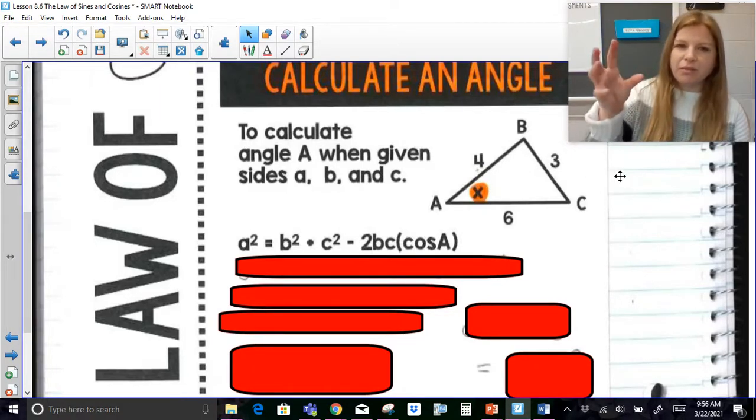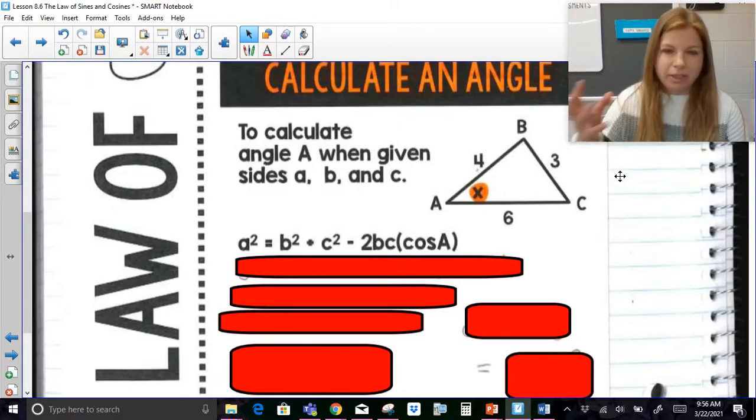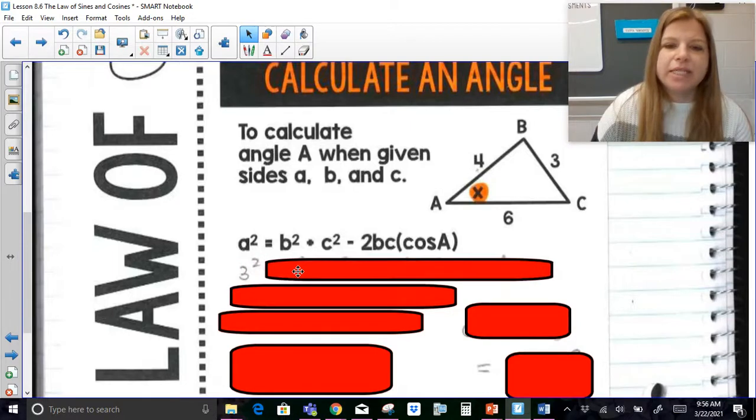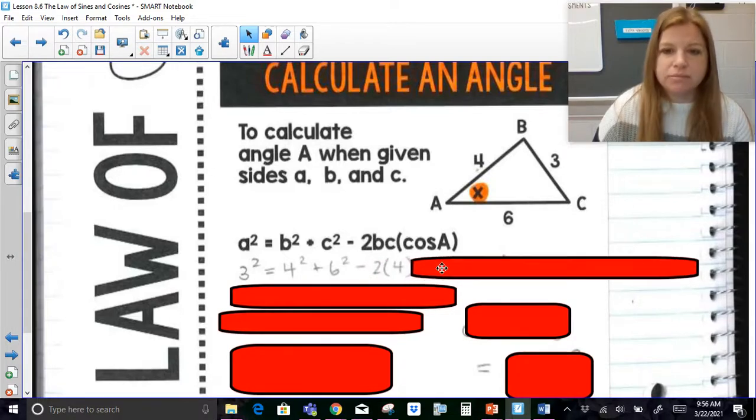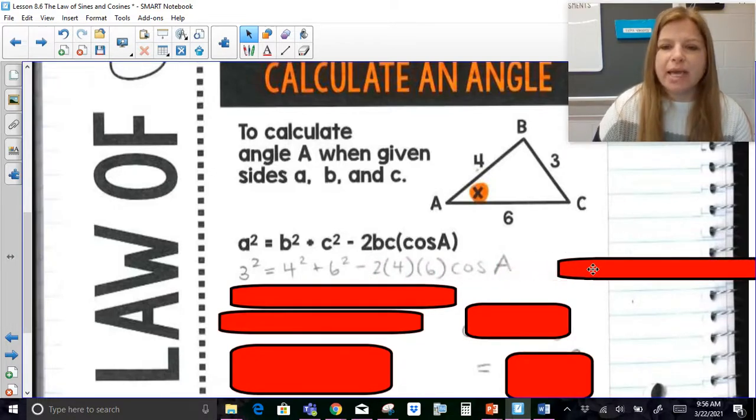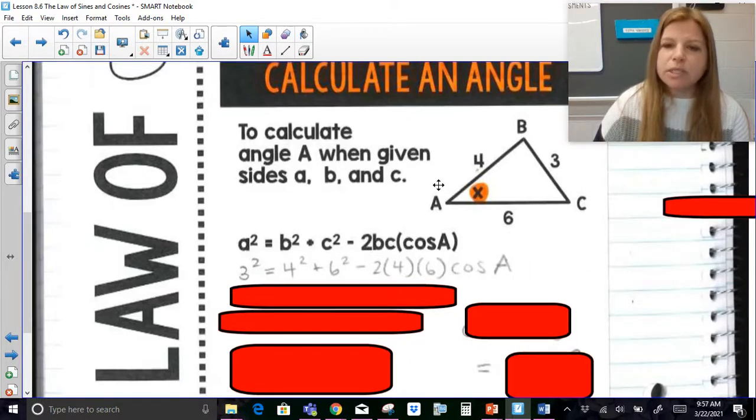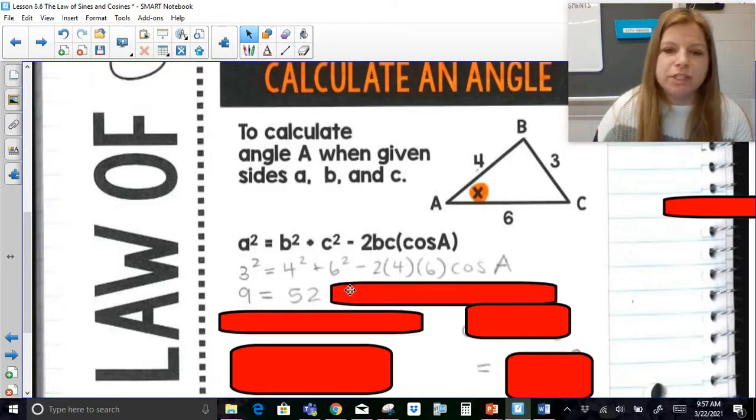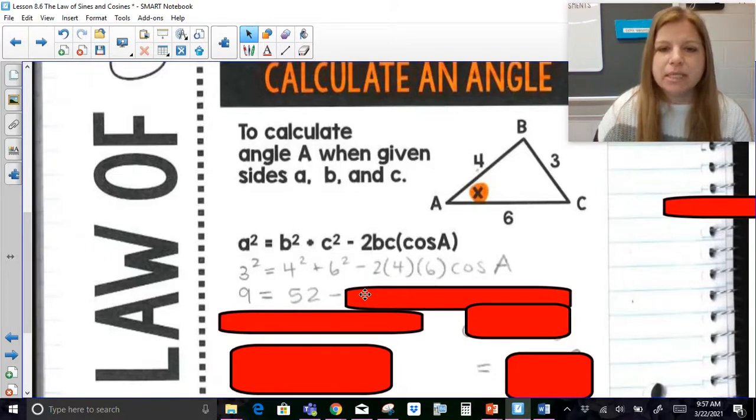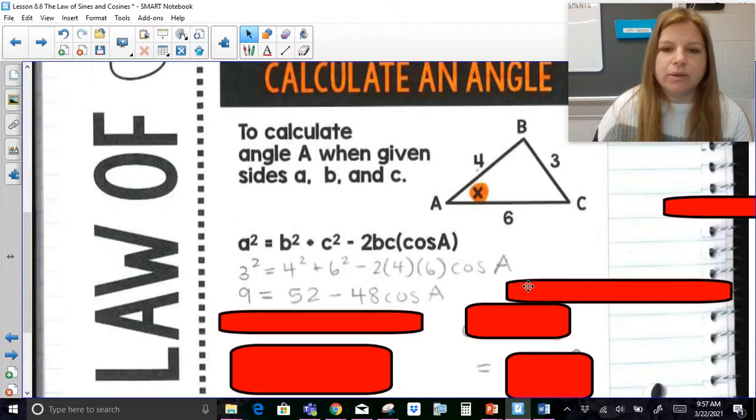And so previously that 3 would have been what we were trying to find, and now we already know it. So in this case, 3 is actually going to go in for a. So that's the side that we know. And then it's still going to be equal to the squares of the other two sides minus 2 times 4 and 6. But now it's cosine a or x. So notice when we're trying to solve for an angle, the only place an angle even goes in this formula is after the cosine. So now I'm going to do my regular calculations. 3 squared is 9, 4 squared is 16, 6 squared is 36. Add them up, you get 52. Minus 2 times 4 times 6. 2 times 4 is 8. Times 6 is 48. Cosine a.